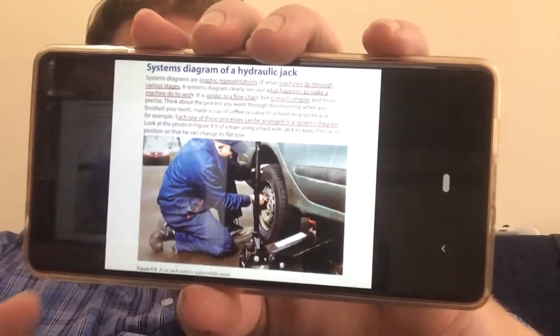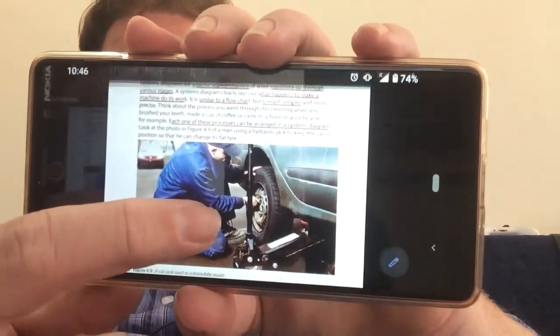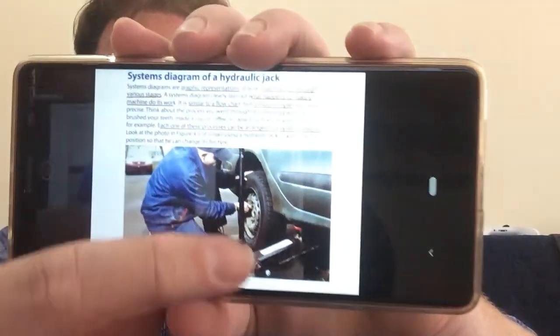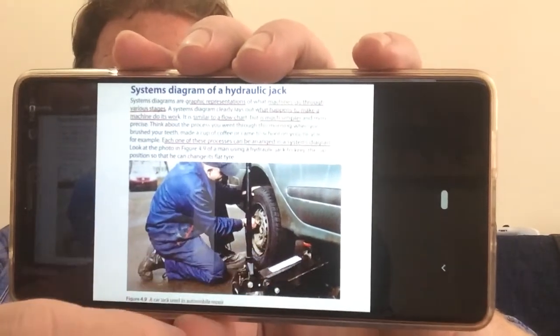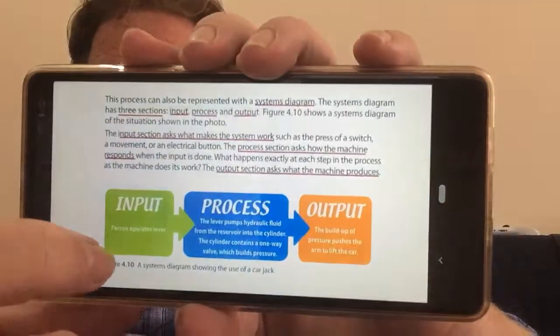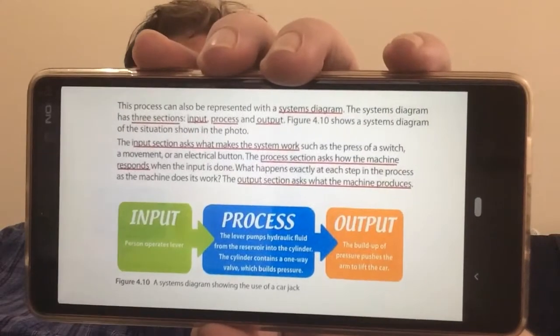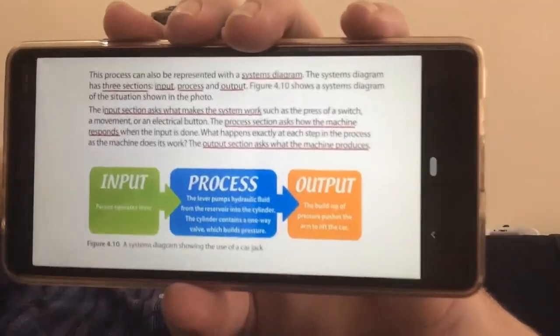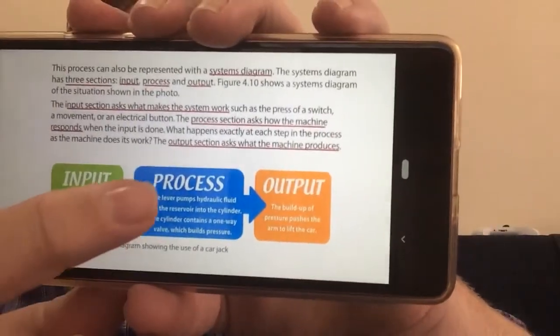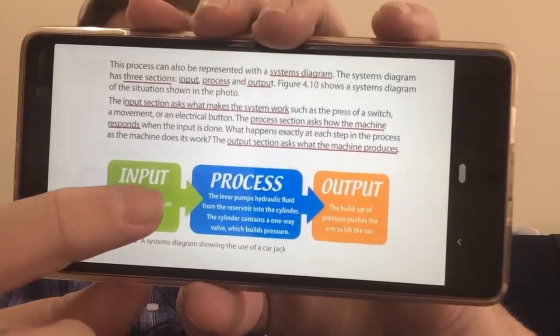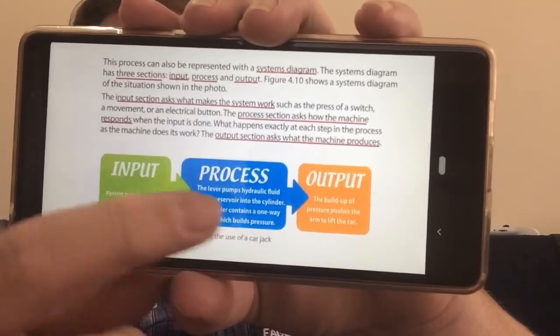So here we've got a guy that would obviously have gone through a series of things to get his jack to work. Let's have a look at how they've managed to put this process into a systems diagram. There's three sections: input, process, and output.